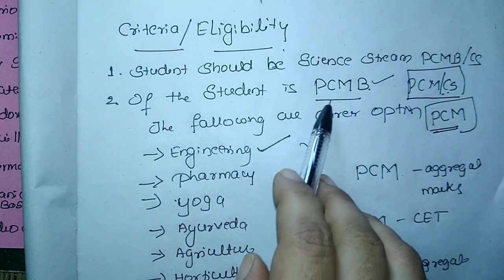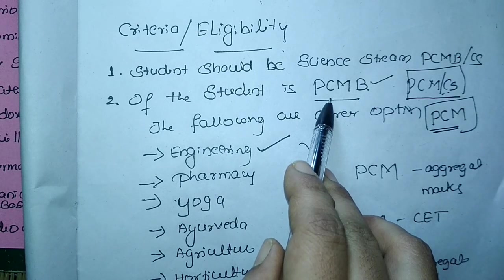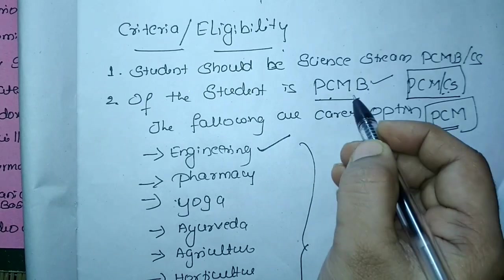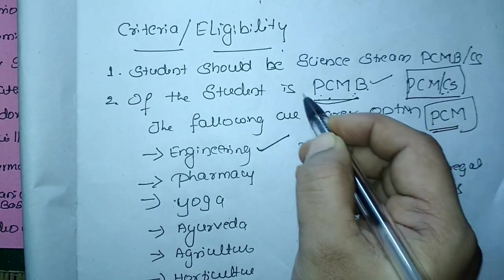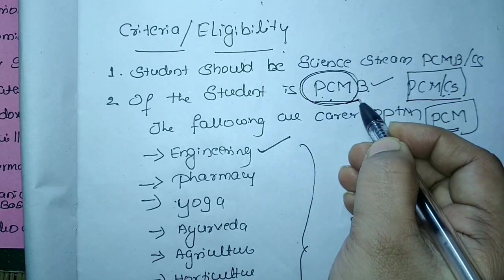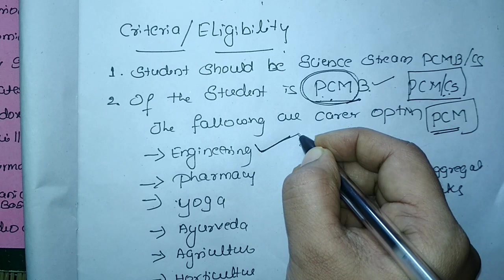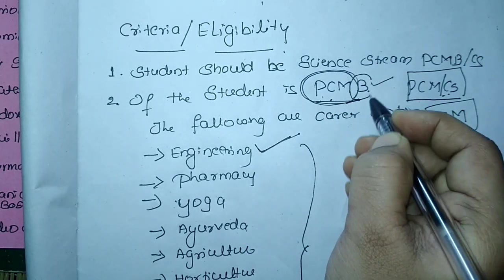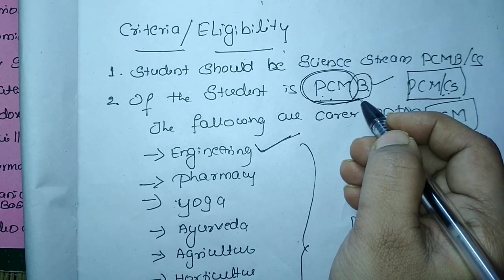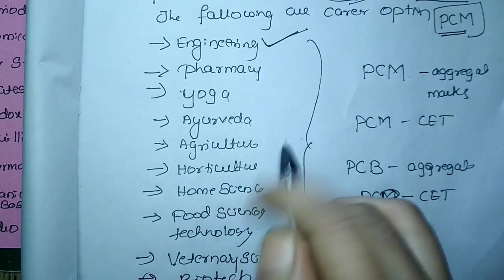Those who have taken PCMB means those who have completed second PU with PCMB they have many more options. They have four subjects here where the PCM if they consider only PCM marks here they can opt engineering or B.Tech. If they consider biology also, if they write Karnataka CET of biology subject also they have many more options like this.